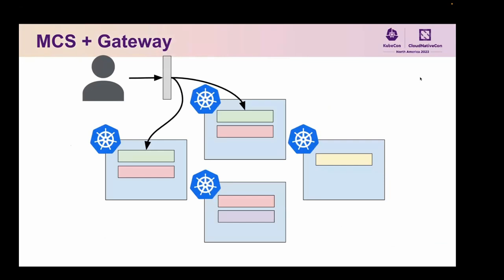This means that if you've built a multi-tiered application with dependencies on other services, you can start moving those services around across different topologies and everything continues to work. It makes it very easy to move from a single cluster model to a multi-cluster world. The ServiceImport resource ended up being even more useful as we worked with SIG Network and the folks there on the Gateway API. We actually figured out that we could get the Gateway API to point at a ServiceImport — taking the new Ingress API and allowing it to point to multiple clusters.